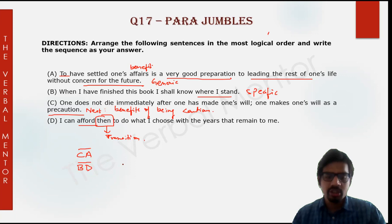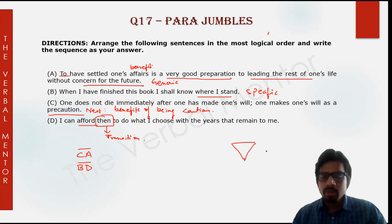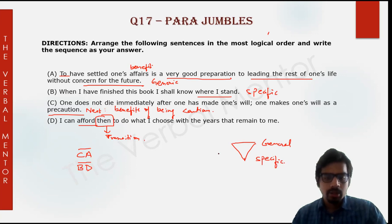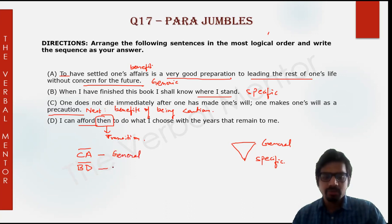Now the question is: which sequence should we arrange first — CA or BD? If you remember, the natural flow of information is from general to specific. It is more likely to be the thought flow, the information flow in a text. Here the sequence CA is a general idea while sequence BD is specific to the narrator.